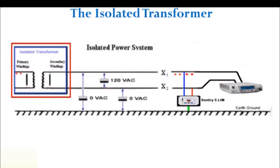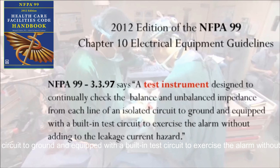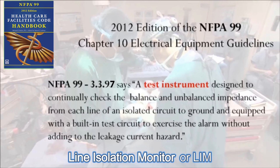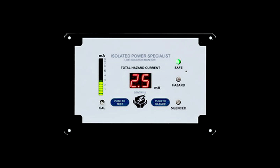Nor are the secondary windings referenced to earth ground. The second component is defined in NFPA 99 codebook section 3.3.97. It says: a test instrument designed to continually check the balance and unbalanced impedance from each line of the isolated circuit to ground, and equipped with a built-in test circuit to exercise the alarm without adding to the leakage current hazard. So we need a test instrument to let us know if any earth ground is starting to creep into the system. That test instrument is called a line isolation monitor, or LIM. Isolated Power Specialists markets a line isolation monitor called the Sentry 5.